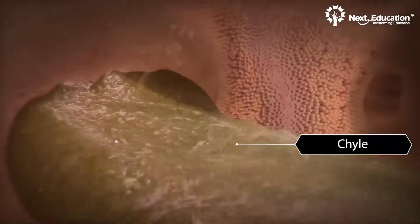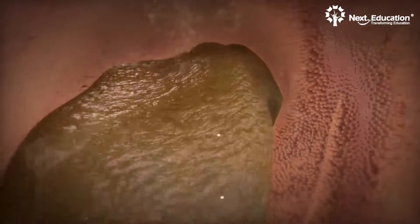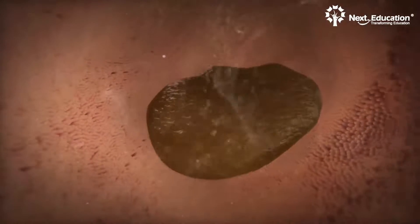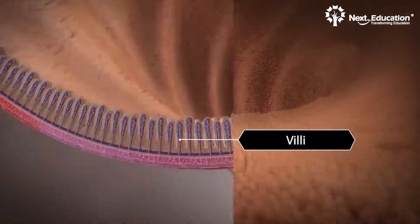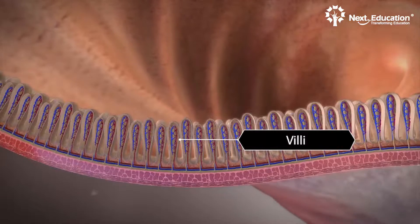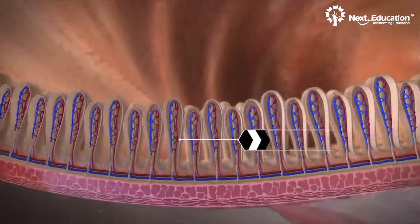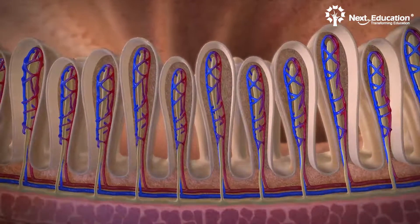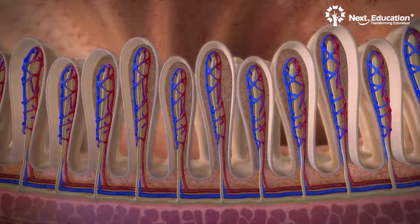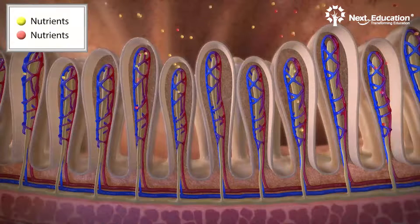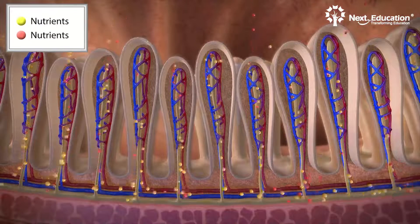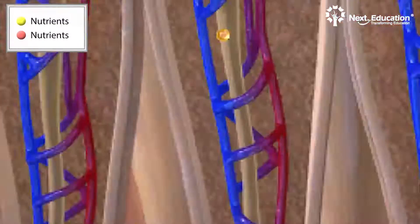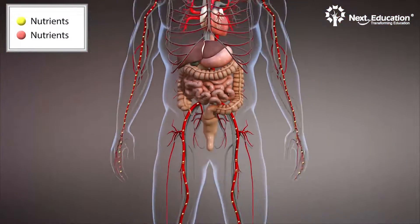Here, the inner walls of the small intestine are lined with numerous finger-like projections called villi. Villi increase the surface area of the small intestine and absorb nutrients. Subsequently, the absorbed nutrients are then transported across the richly supplied blood vessels within villi to all the cells in the body.